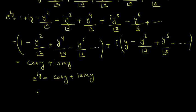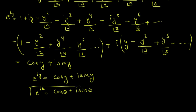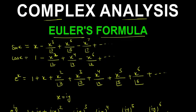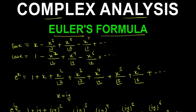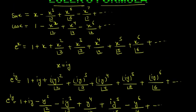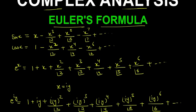So we can write this as e raised to power iota theta equals cos theta plus iota sine theta. This is how we derive Euler's formula. In an exam they can ask you to derive Euler's formula and you have to do it like this. Thanks for watching this video, and always remember that math is everything.